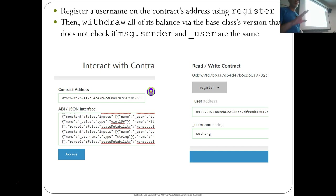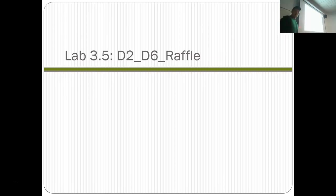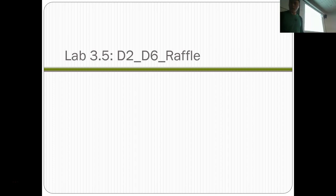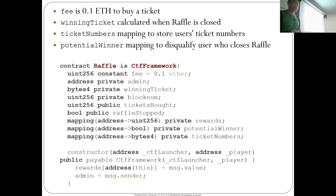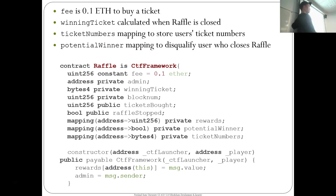Today I'm going to start with a lab I wanted to walk through last class. Lab 3.5 is the raffle contract, a combination of two vulnerabilities. The raffle ticket contract: you buy a raffle ticket, and when the raffle closes, the contract randomly chooses a winner. The contract has a fee — the ticket price of 0.1 Ether — and a winning ticket number that will be randomly selected.